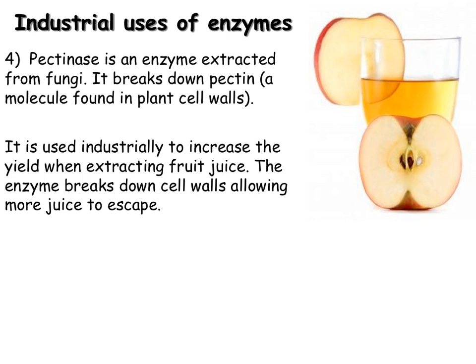Our fourth industrial use of enzymes is in the production of fruit juice. This uses the enzyme pectinase, which is extracted from fungi. Pectinase breaks down pectin, a molecule found in plant cell walls, and is used industrially to increase the yield when extracting fruit juice — the enzyme breaks down cell walls allowing more juice to escape from inside the cells. In a simple experiment, apple chunks are placed in a beaker with pectinase and another with water, incubated at 40°C for 15 minutes, then filtered. More juice is obtained from the pectinase beaker.